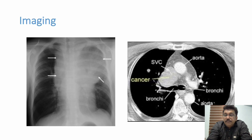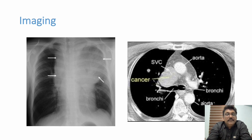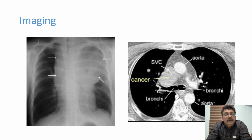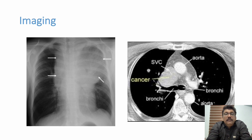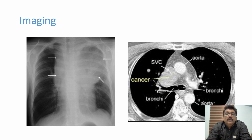The most important investigation is the chest X-ray, a simple non-invasive investigation. On chest X-ray, a white homogeneous opacity in the upper mediastinum is classical of mediastinal widening. On CT scan, you can see the SVC completely obstructed by cancer cells — the SVC is completely collapsed — which produces SVC syndrome.